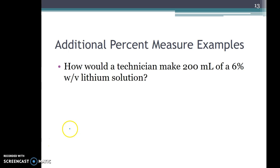So we'll start off with our percent, so 6% would be 6 over 100 and we want to make 200 so we want to know X out of 200.